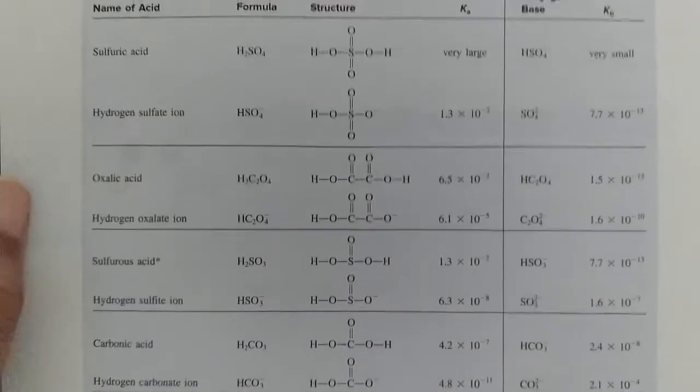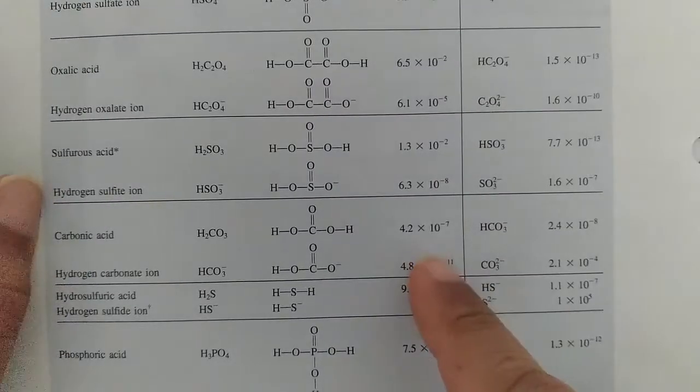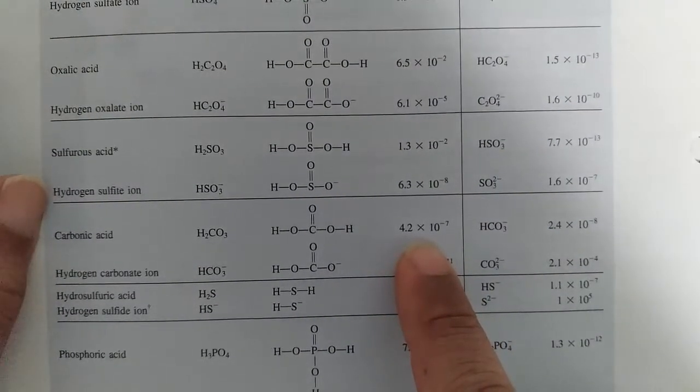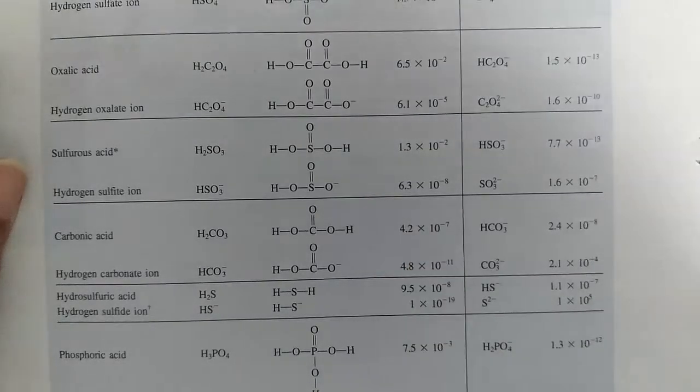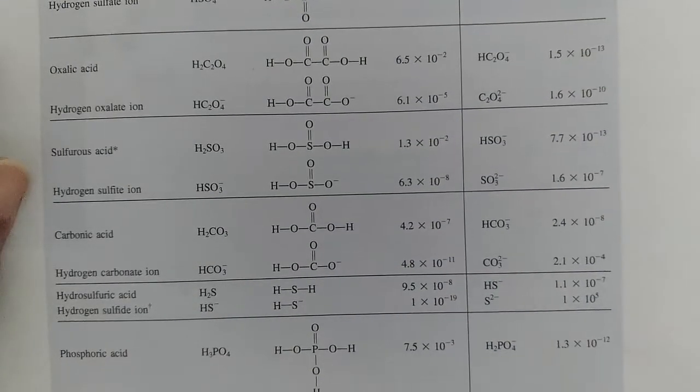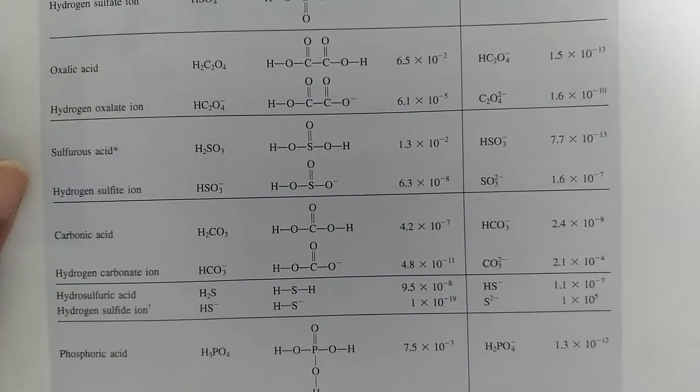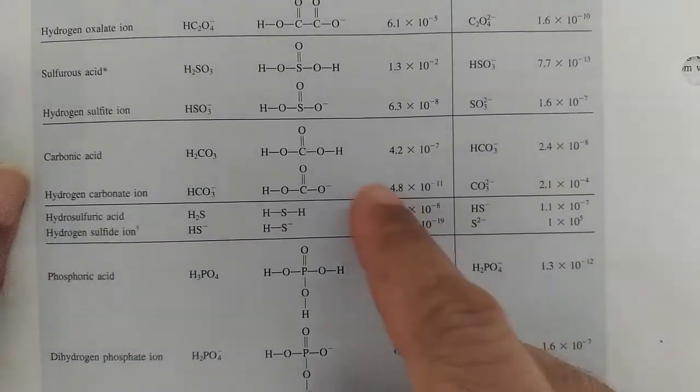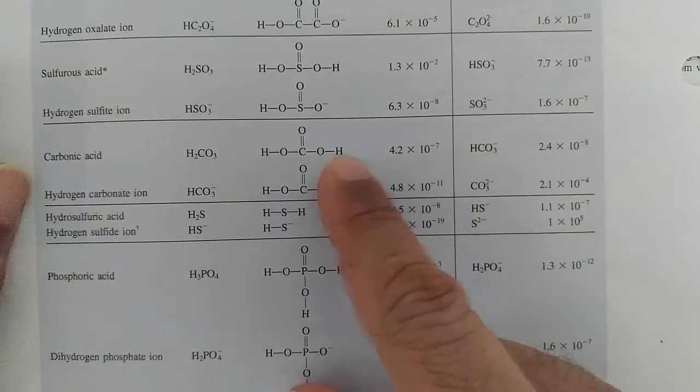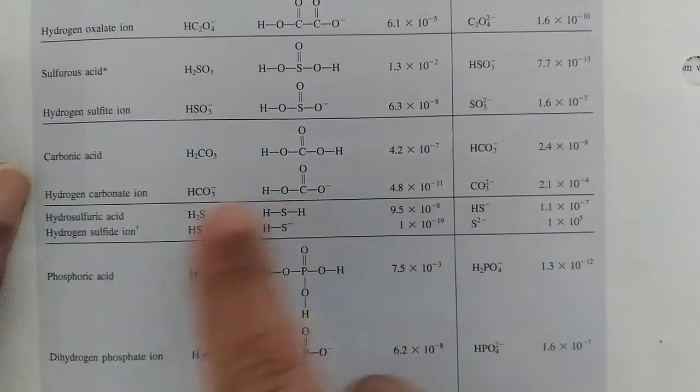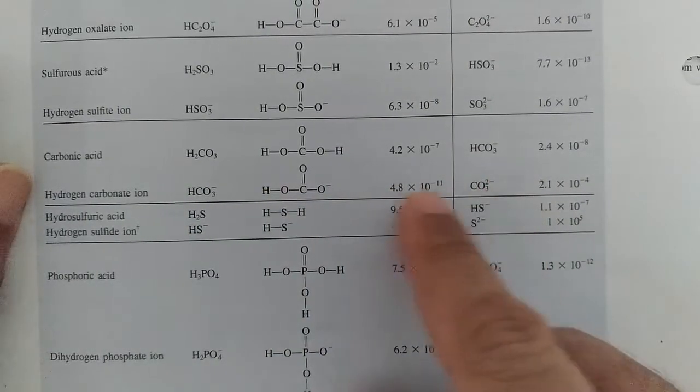The first thing we need to do is get our Ka's. We have our Ka for carbonic acid which is 4.2 × 10^-7, and then we would need the Ka for our second HCO3^- and that's right below it. The first proton comes off like that and then this proton to give you carbonate comes off at 10^-11.